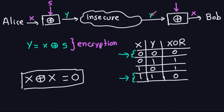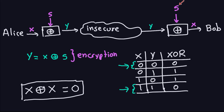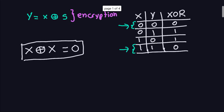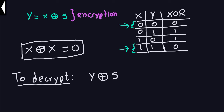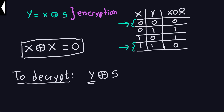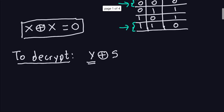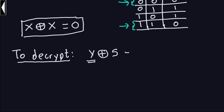To decrypt, the process is: you take the ciphertext Y and you XOR it again with S. Now, what is Y? Y is the ciphertext, obtained as X XOR S. So I'm going to replace Y: instead of saying Y, I'm going to say X XOR S. So this is exactly the same as saying: the result is equal to X XOR S XOR S again, because I'm replacing Y with X XOR S, and then XOR S again.